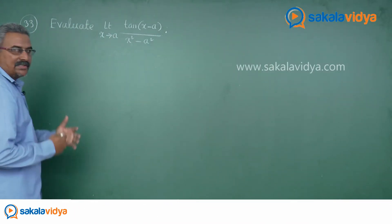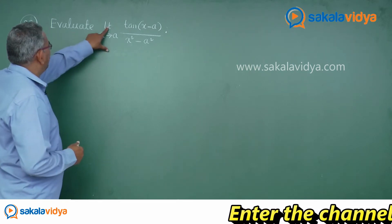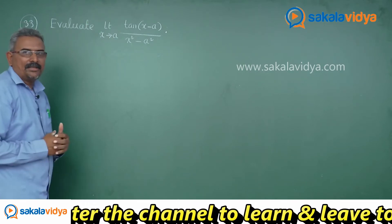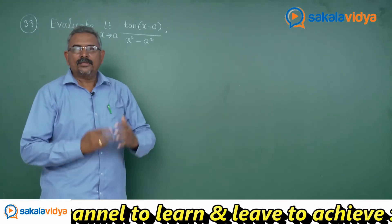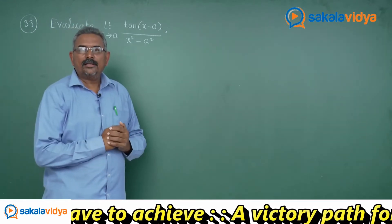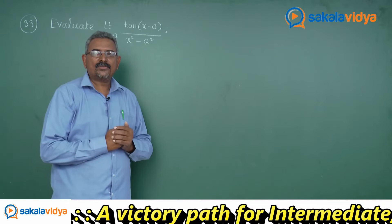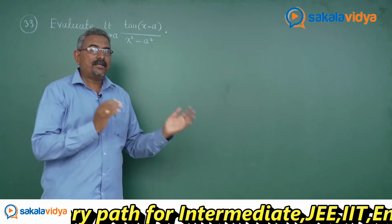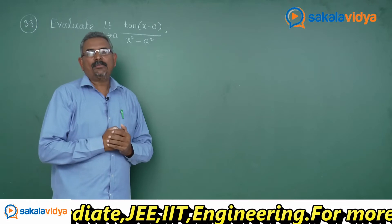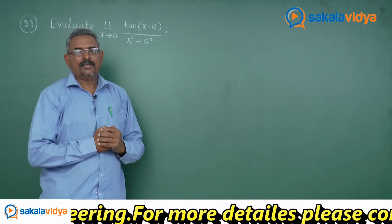Let me read the question first. Evaluate: limit x tends to a, tan(x minus a) divided by (x² minus a²). First, let us simplify the denominator. x² minus a² can be written as (x minus a)(x plus a), using the algebraic identity a² minus b² equals (a minus b)(a plus b).